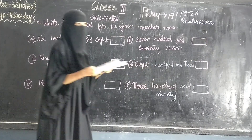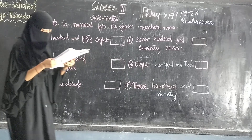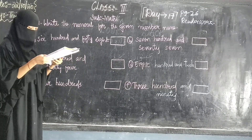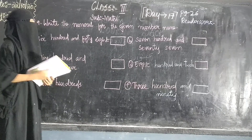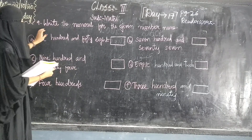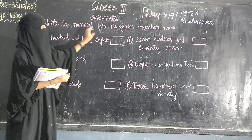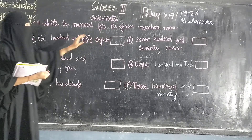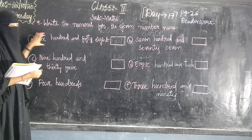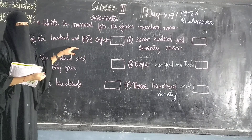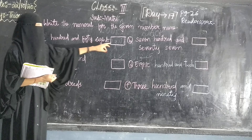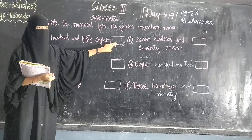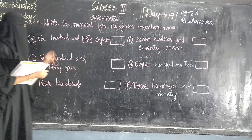Question number 9. Write the numeral for the given number name. Aapko number name given hai, pada aapko ke lena hai, box me figure jo likh hai — number me isko convert kerna hai.